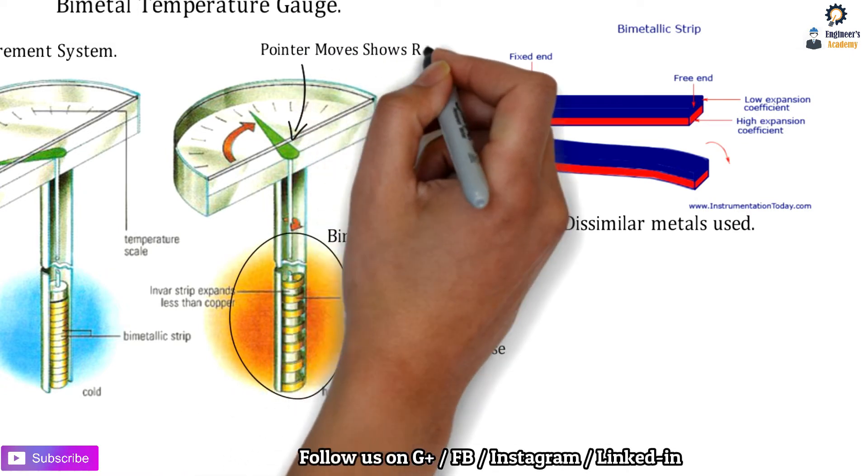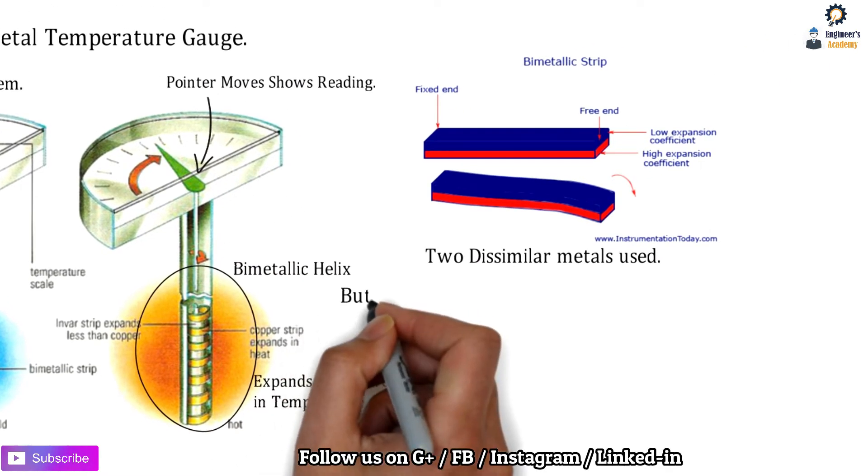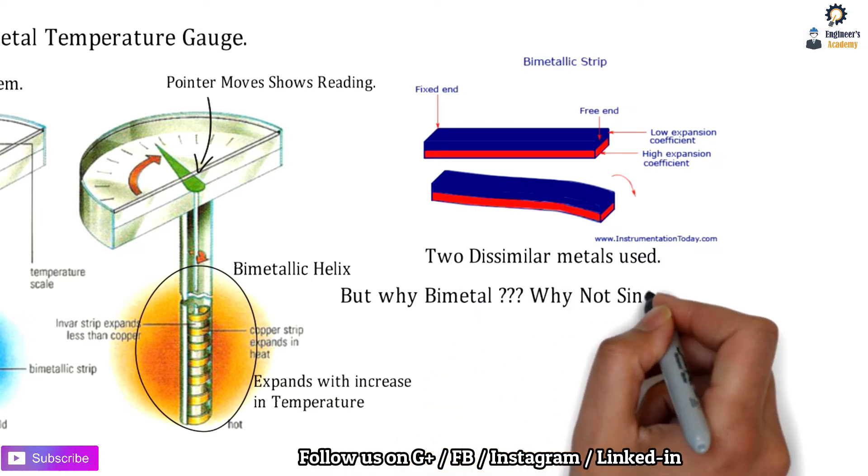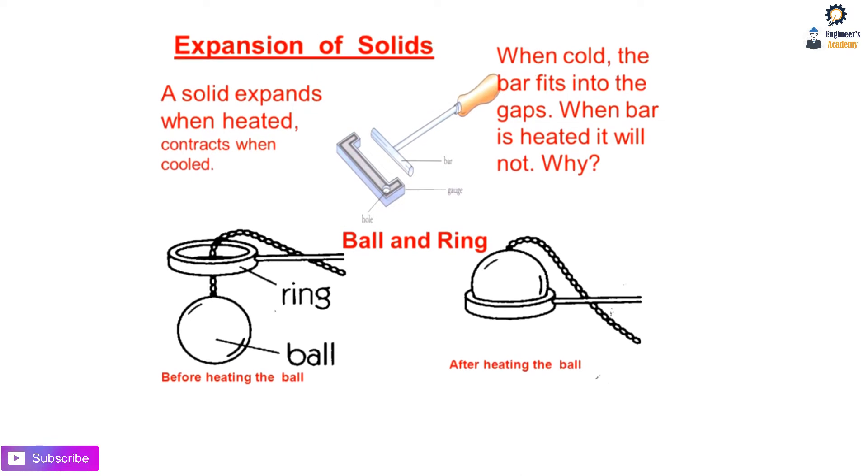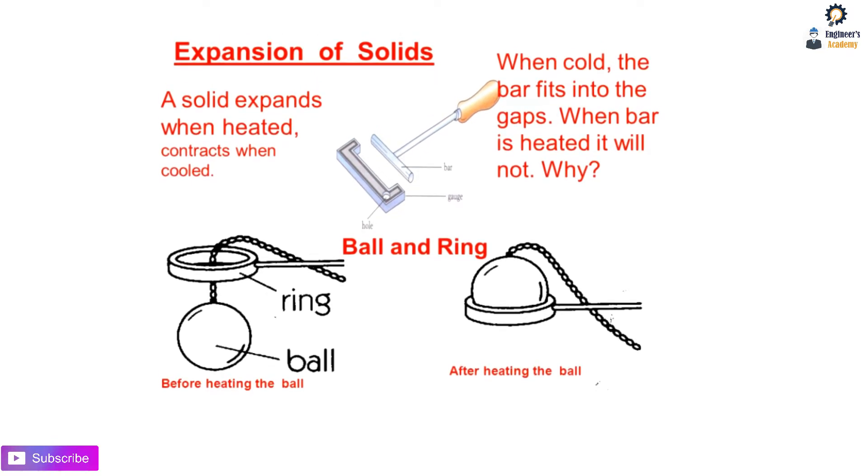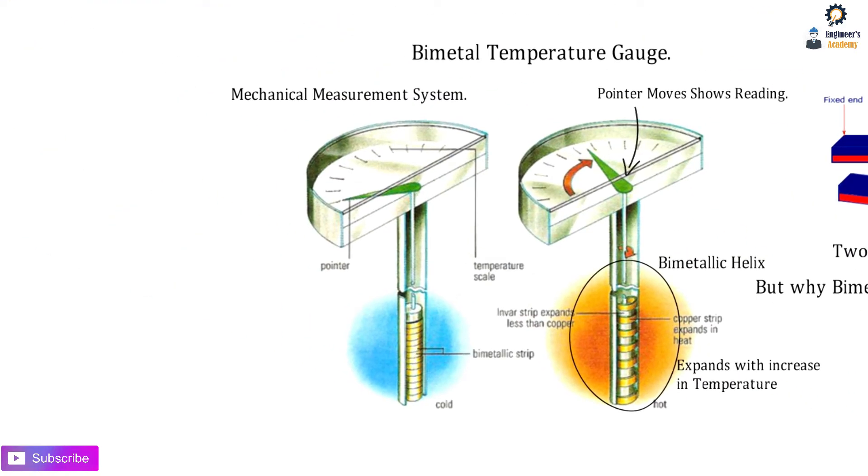But why does this bimetallic strip consist of two different metals? Why not a single metal? Let's look at an experiment with a ball and ring. When we heat the ball, it first passes through the ring easily, but after heating, it won't pass through. This demonstrates that solids expand when heated and contract when cooled - the basic principle behind the bimetallic temperature gauge.